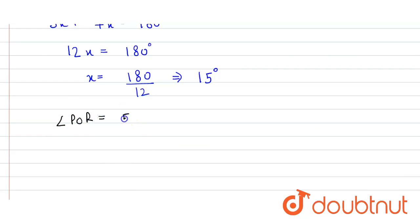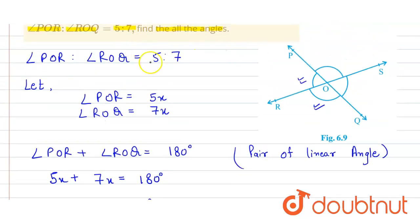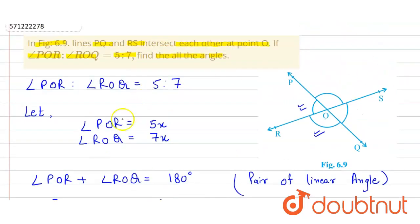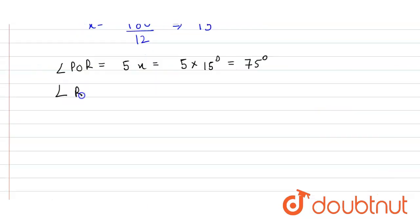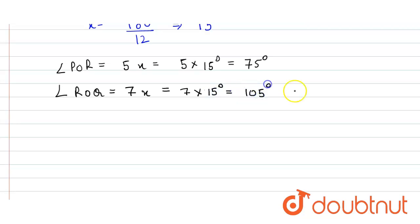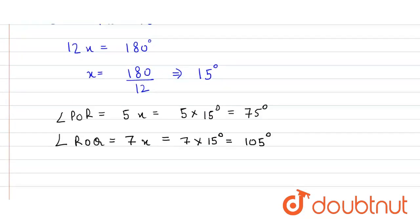So angle POR equals 5x equals 5 times 15 equals 75 degrees. And angle ROQ equals 7x equals 7 times 15 equals 105 degrees. So we have found two angles: POR equals 75 degrees and ROQ equals 105 degrees.